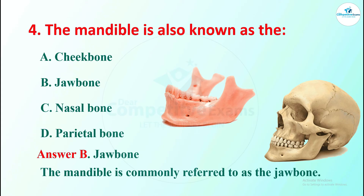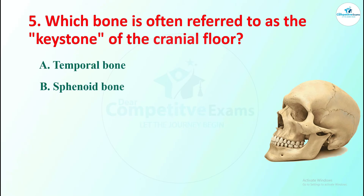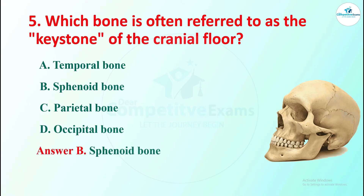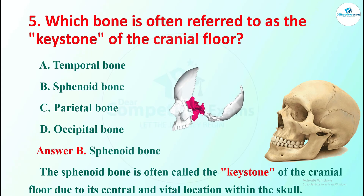The fifth question: which bone is often referred to as the keystone of the cranial floor? Options are temporal bone, sphenoid bone, parietal bone, or occipital bone. The right answer is sphenoid bone. The sphenoid bone is often called the keystone of the cranial floor due to its central and vital location within the skull.